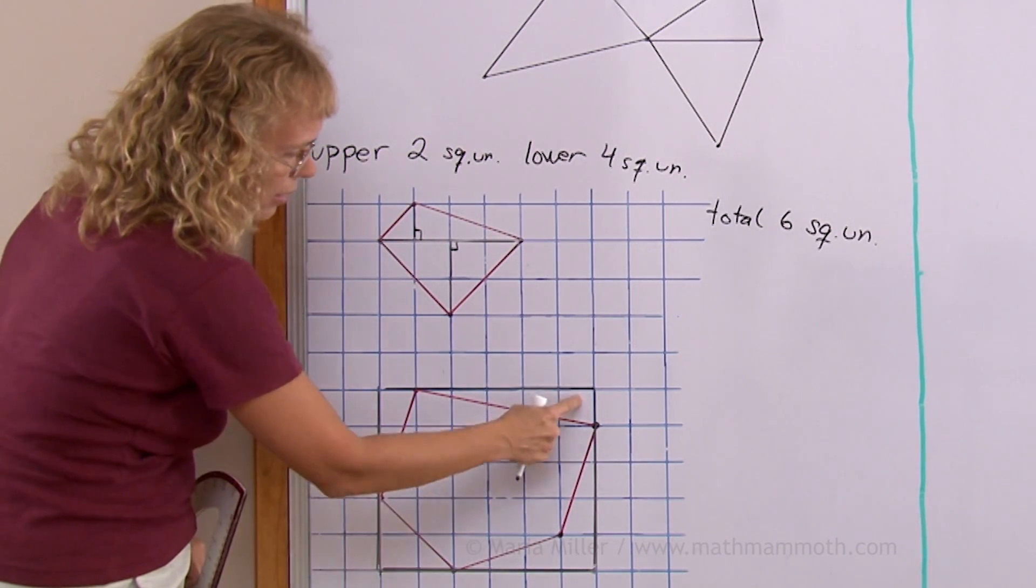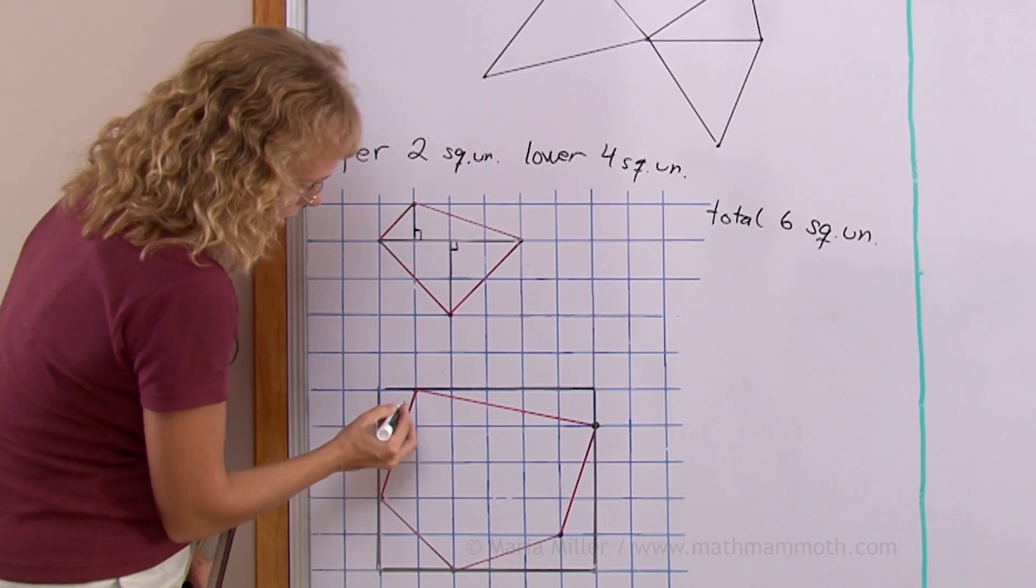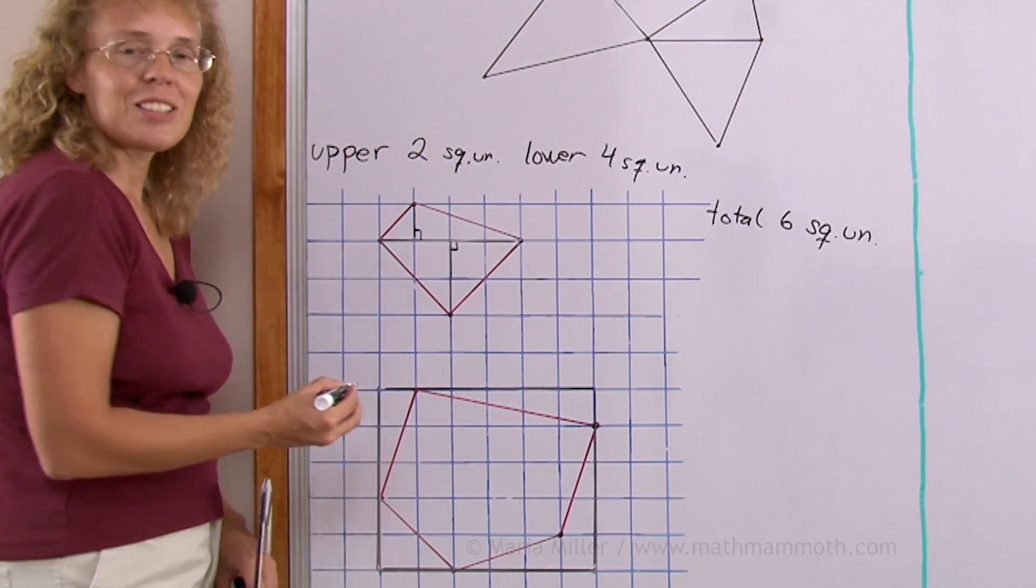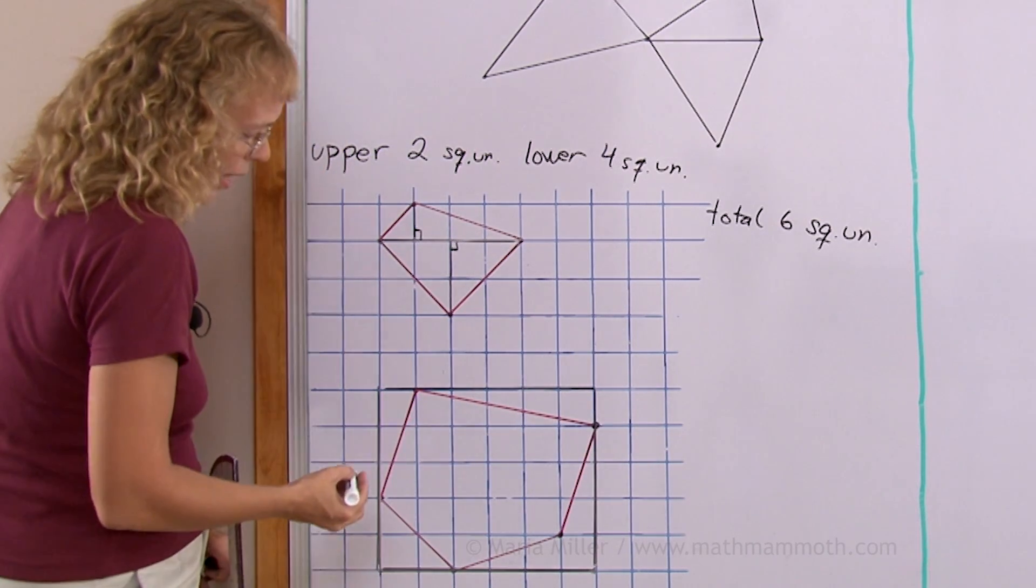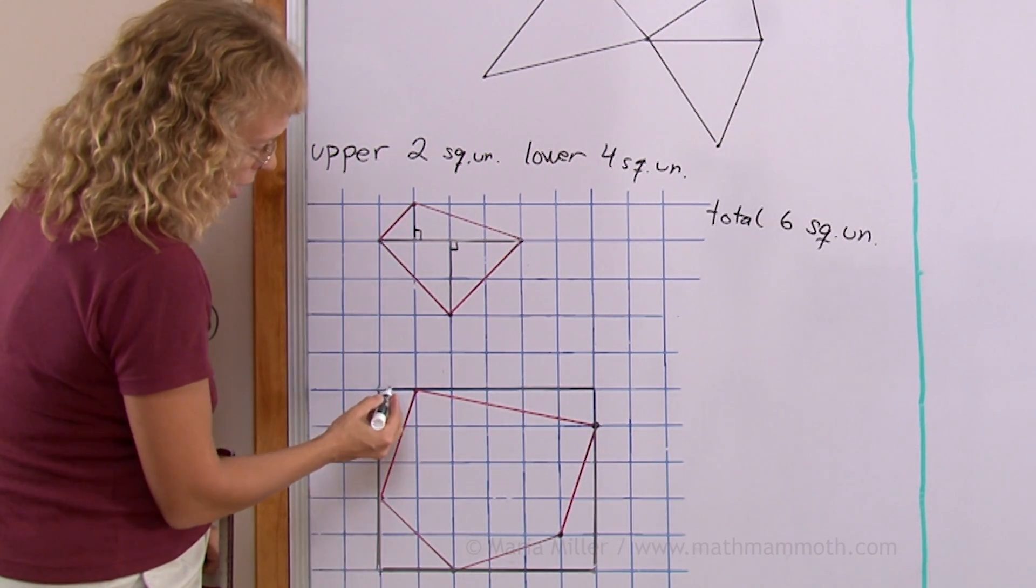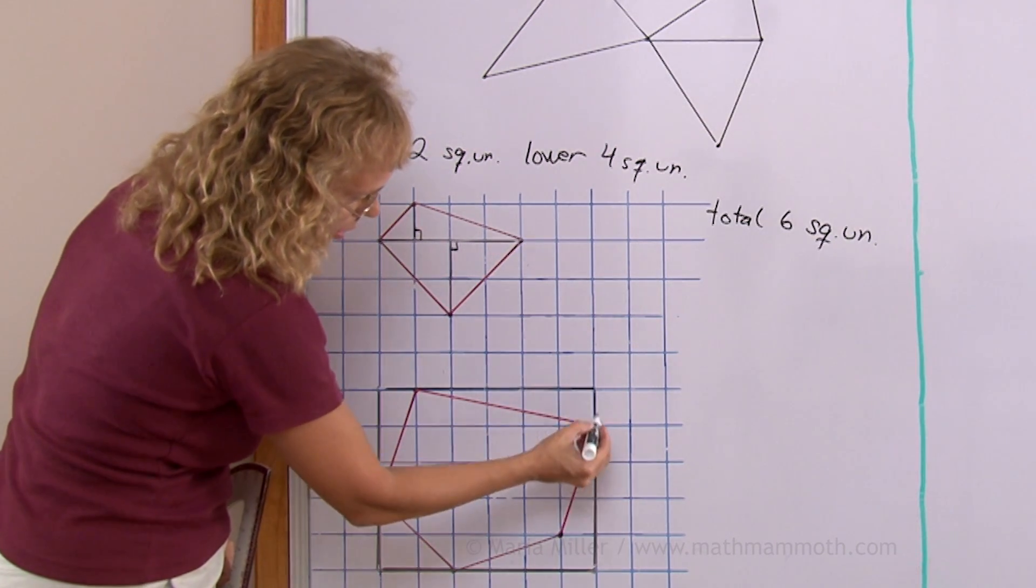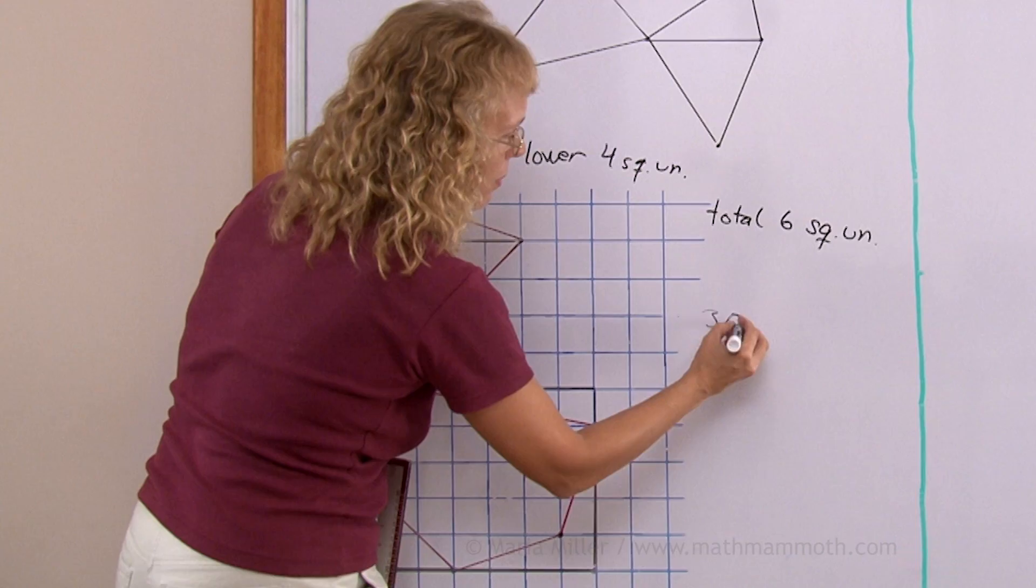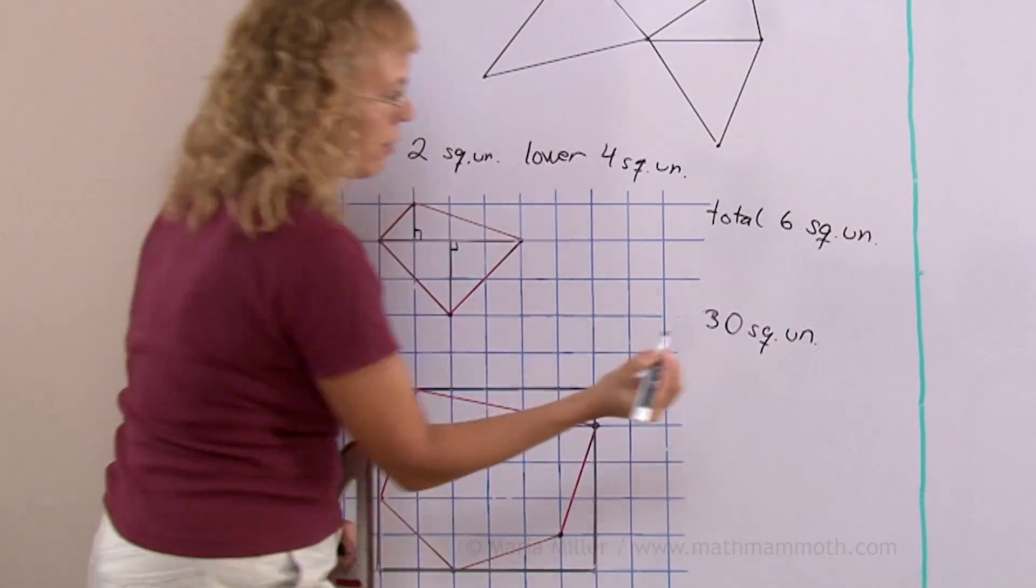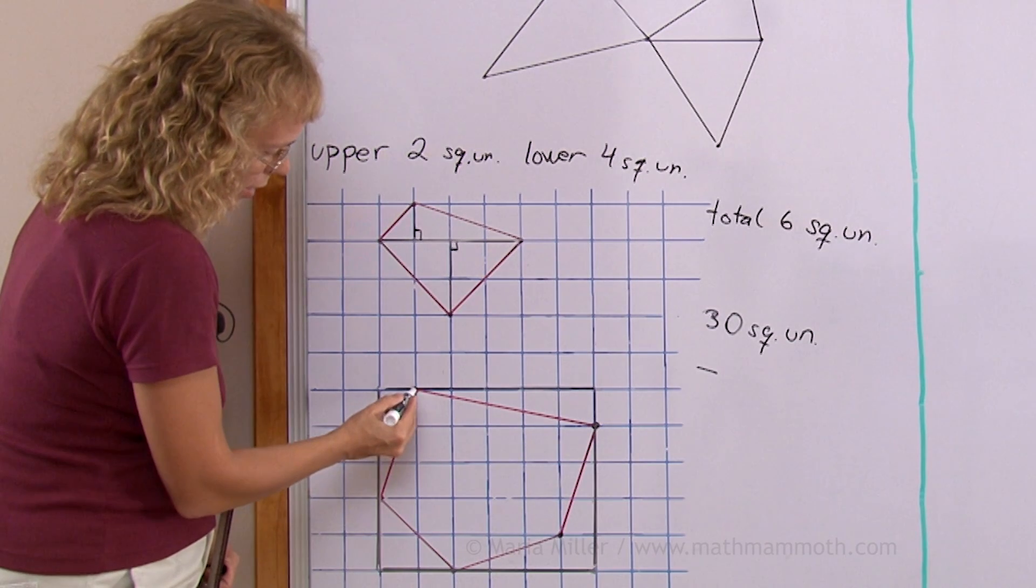The idea here is that it's very easy to calculate the area of this rectangle and then we will be left with triangles that we need to subtract. These are right triangles and it's very easy to find the area of a right triangle in the grid. The rectangle is six by five units, so 30 square units, and then we subtract all these little areas.